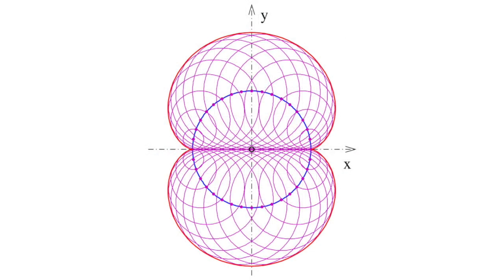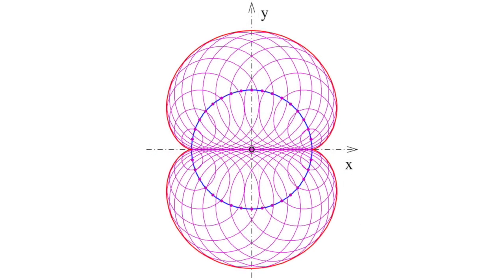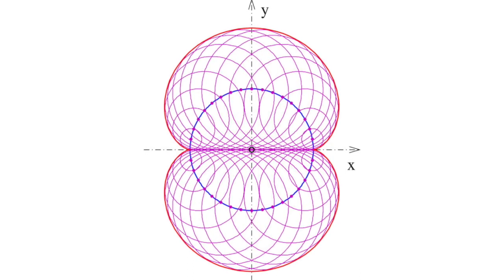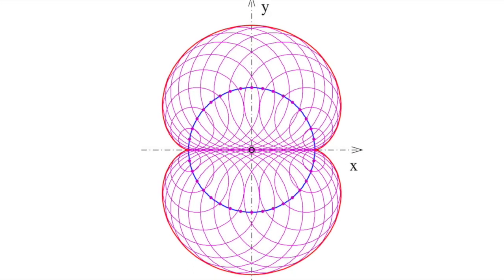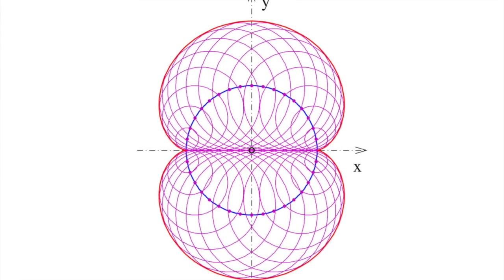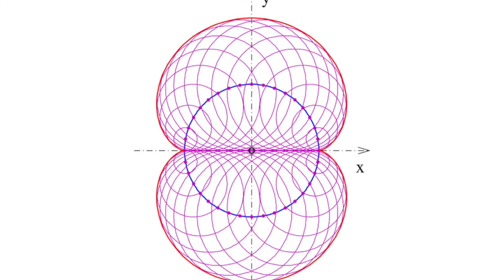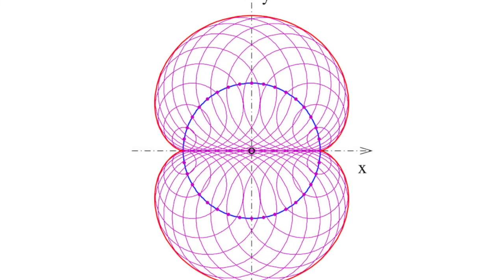The nephroid is the involute of the special kind of sinusoidal curve known as cayley's sextic, and it's also the envelope of circles with their centres on a given circle, touching a given diameter of that circle.